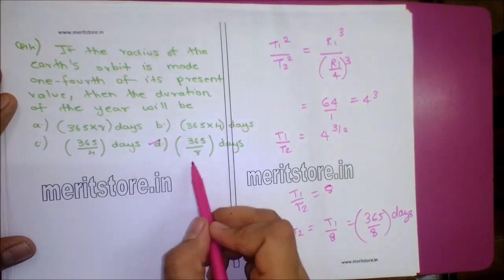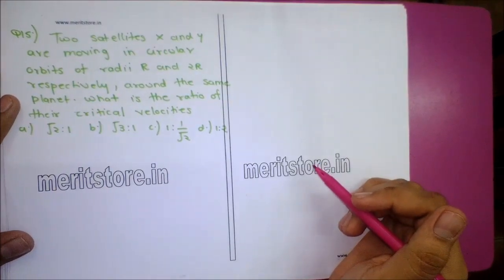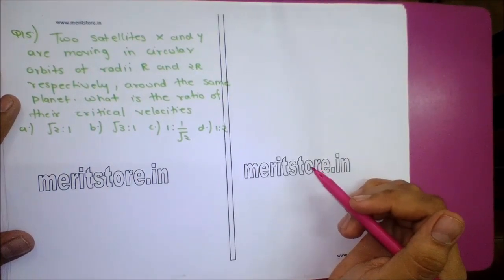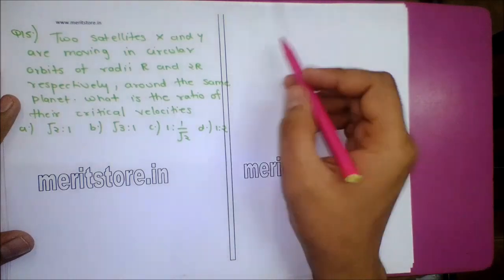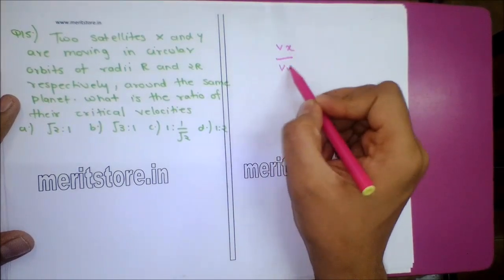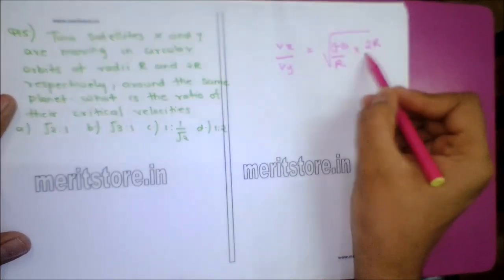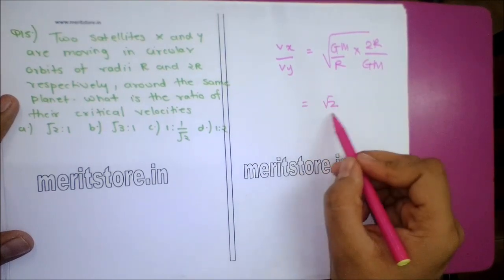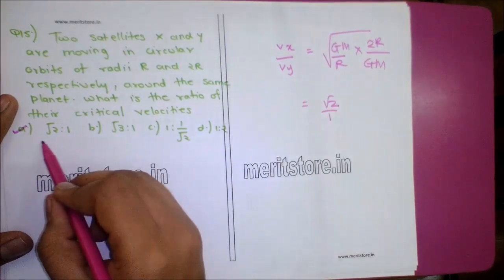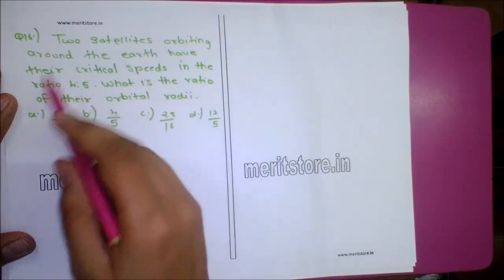Question 15: Two satellites X and Y are moving in circular orbits of radii R and 2R respectively around the same planet. The ratio of their critical velocities: Vx/Vy = √(GM/R × 2R/GM) = √2/1. Option D, √2:1, is the correct answer.